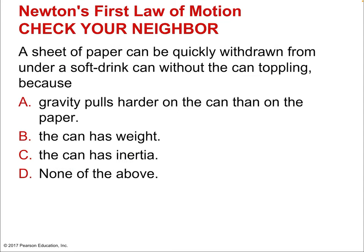Let's consider a check. A sheet of paper can be quickly withdrawn from under a soft-drink can without the can toppling. Why is this? Is it because gravity pulls harder on the can than on the paper? Is it because the can has weight? Is it because the can has inertia? It's inertia — the same idea as pulling quickly on the string of a hanging ball and having the bottom string break.